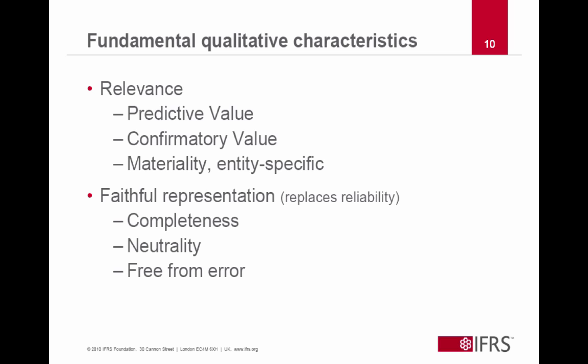Faithful representation, the other fundamental qualitative characteristic, also has three components. The first is completeness. Faithful representation says that the item represents what it purports to represent — it faithfully represents whatever we're talking about, such as an asset or a liability. We want a complete representation in terms of both numbers and words, encompassing both the number recognized in the financial statements as well as the disclosures about it.